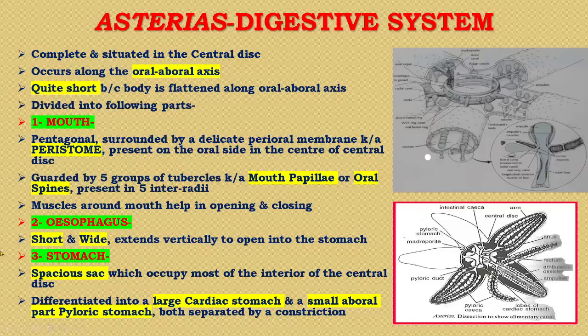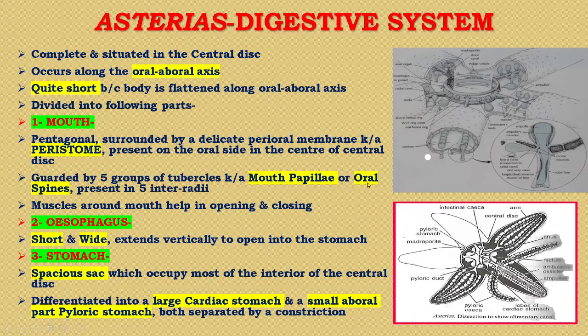The first part is the mouth, which is pentagonal. It is surrounded by a delicate perioral membrane known as peristome, which is present on the oral side at the center of the central disk. It is guarded by five groups of tubercles known as mouth papillae or oral spines, present in five interradii. The muscles around the mouth help in opening and closing.